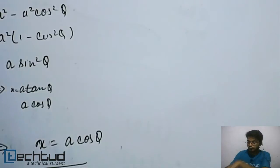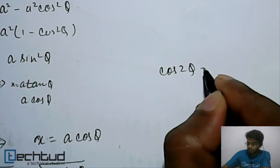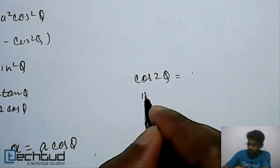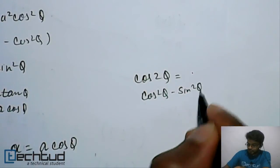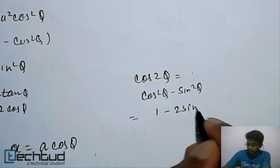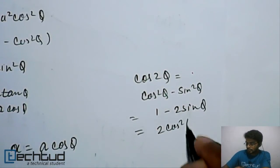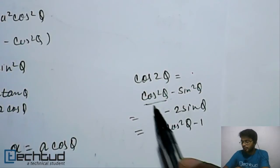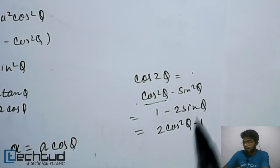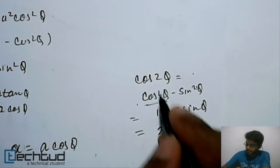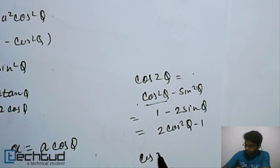Now, recalling the formula for cos2θ: it equals cos²θ−sin²θ, which is also equal to 1−2sin²θ or 2cos²θ−1. These come from replacing one term using cos²θ+sin²θ = 1. So if we have cos2θ+1, we can write that as 2cos²θ.